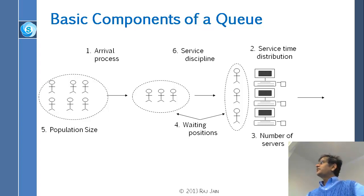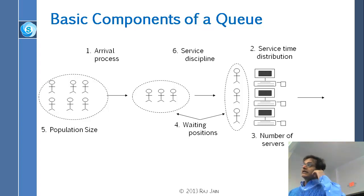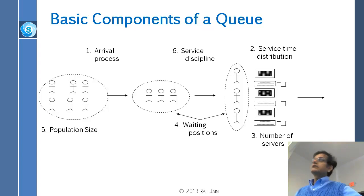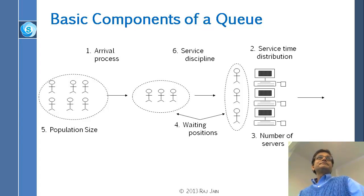The second thing is service time distribution — how are they being served? If everybody has one or two items, that is different than if everybody has full carts. Third is the number of servers — how many lanes are open? Fourth is how many people can stand in the queue.